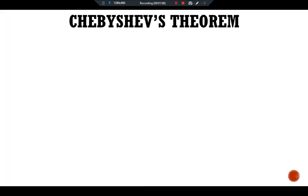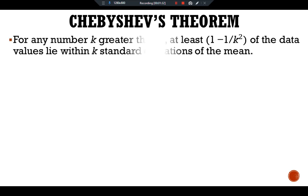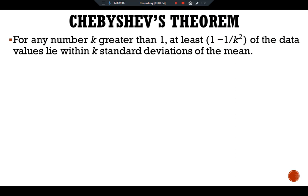So let's discuss Chebyshev's theorem. Dear scholars, Chebyshev's theorem gives a lower bound for the area under a curve between two points that are on opposite sides of the mean and at the same distance from the mean. For this purpose, we have the definition: for any number k greater than 1, at least 1 minus 1 over k squared of the data values lie within k standard deviations of the mean. For further understanding, let me give you a graphical example.